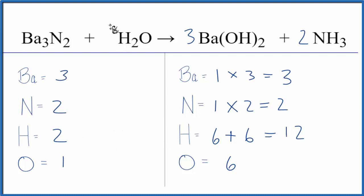Let's fix the hydrogens. We'll put a six in front of the water. Two times six. That'll give us twelve. The hydrogen atoms are balanced and then one times six. Now the oxygens are balanced and now we're done.